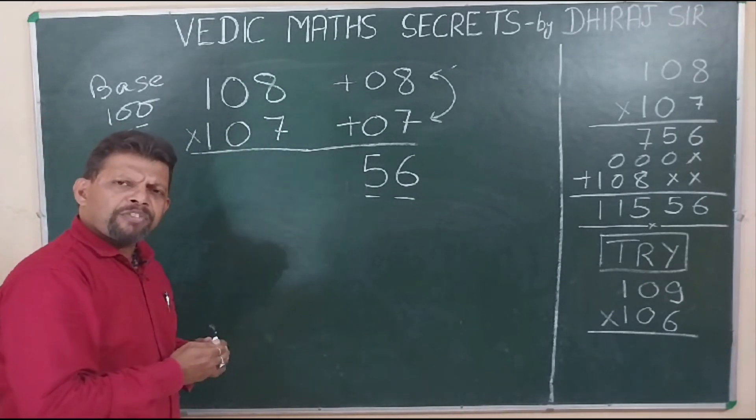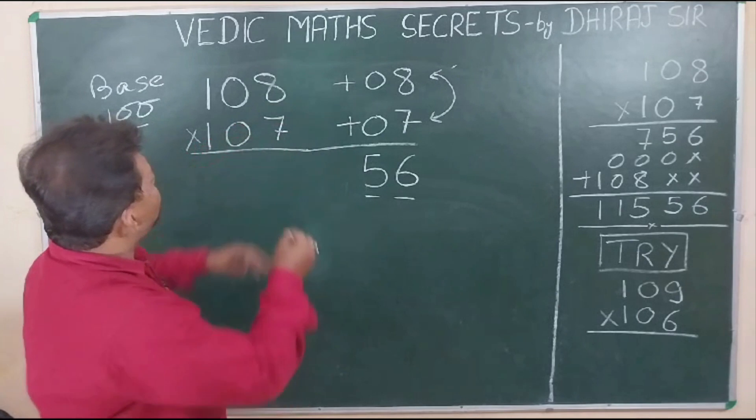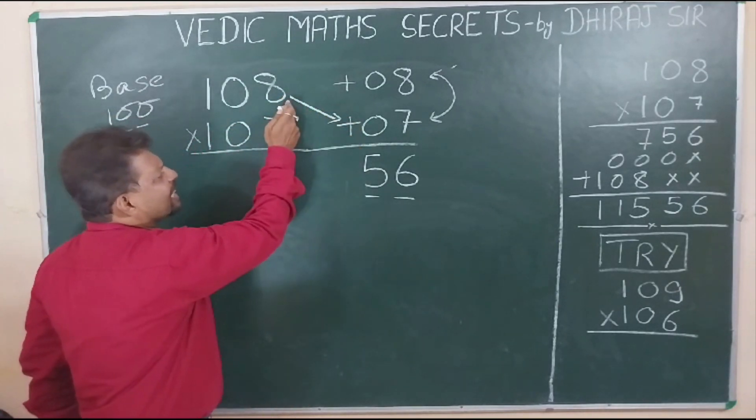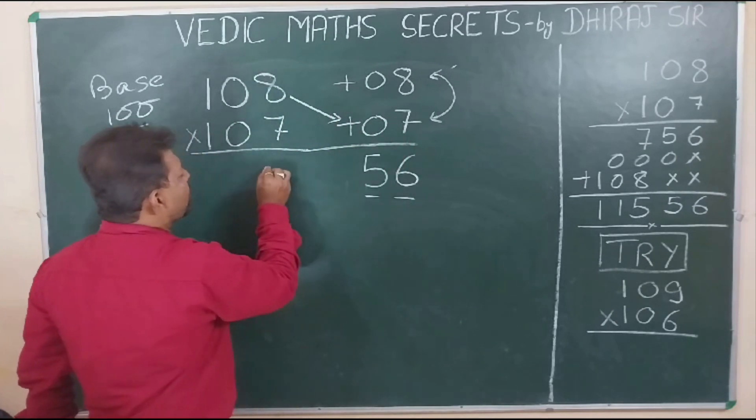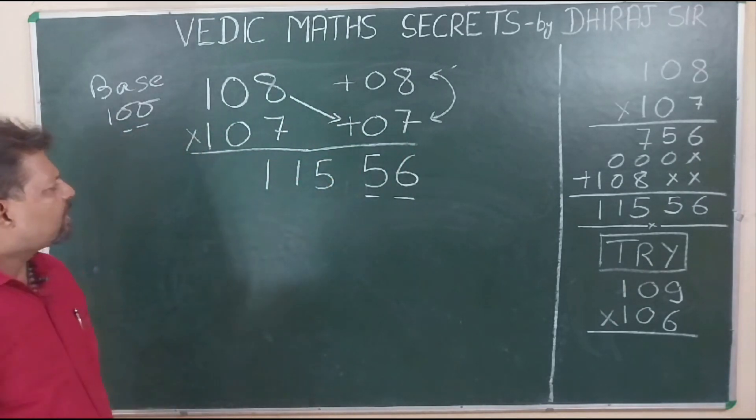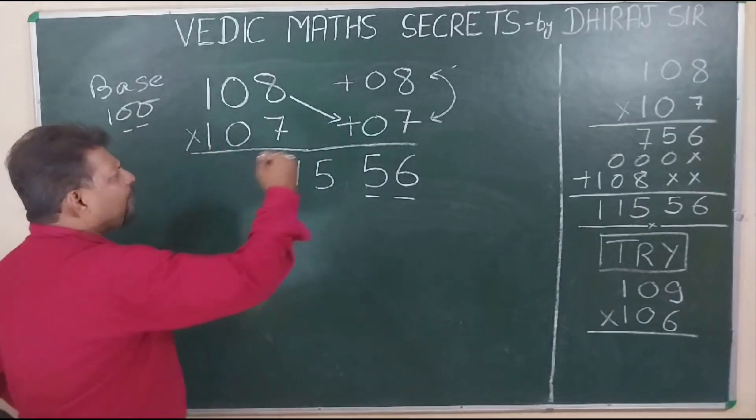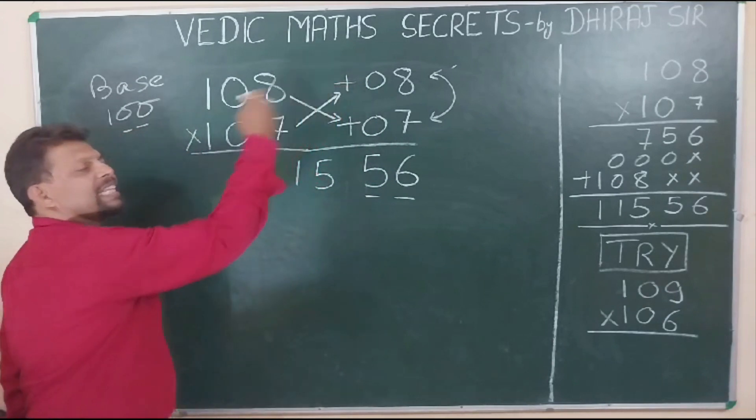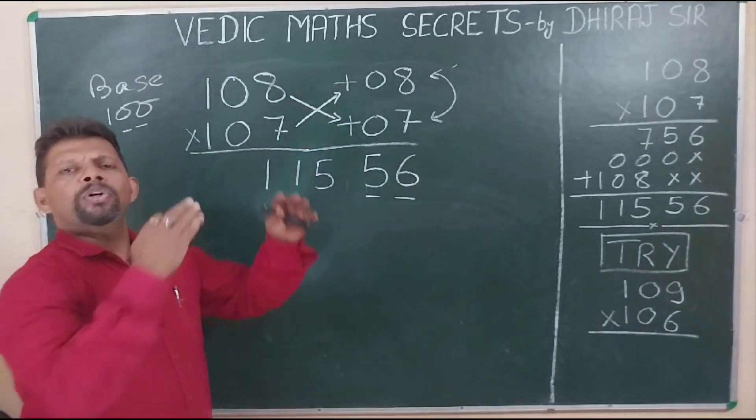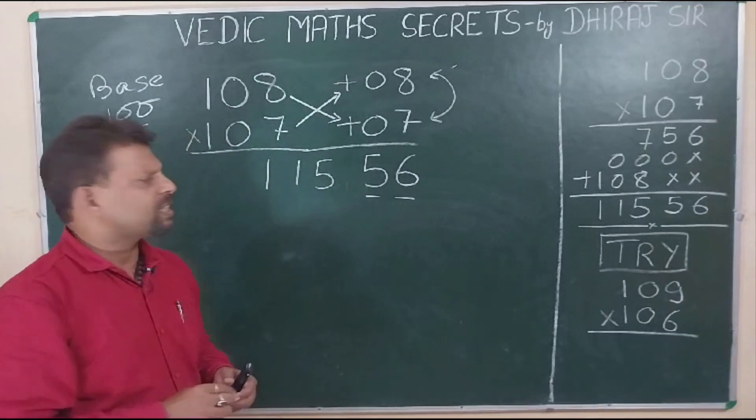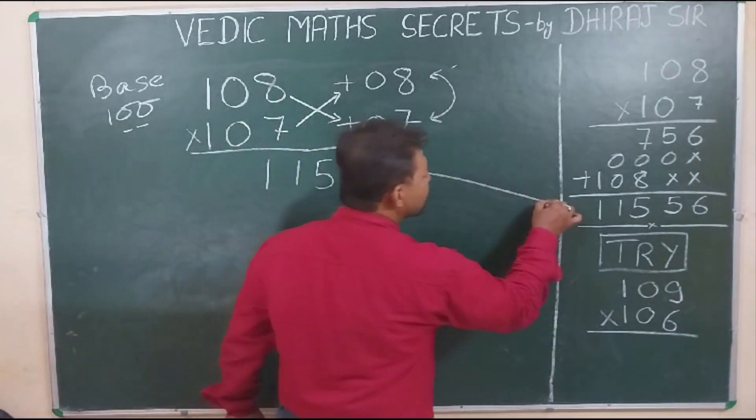In order to get the left part of the answer, you simply in this case, you have to add 108 plus 7, this will become 115. That's correct. You could have even added 107 and this 8. We do cross addition over here or cross subtraction as in the previous case. And there you have got the answer.